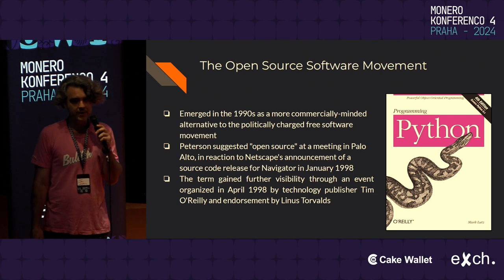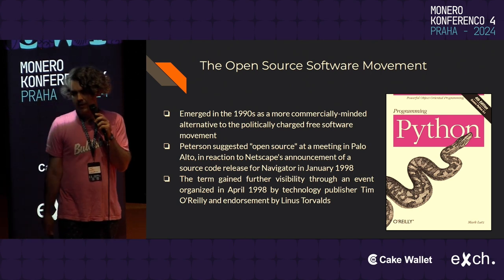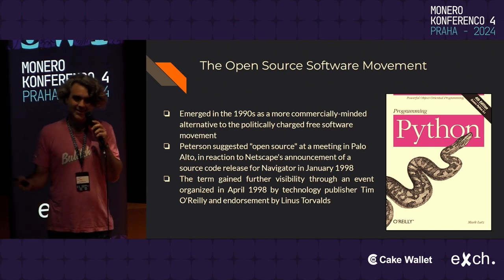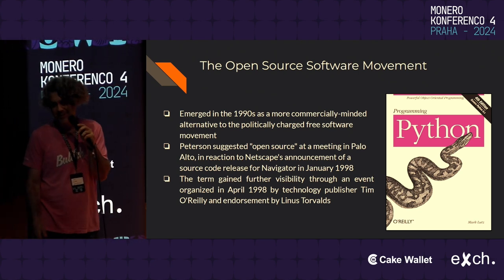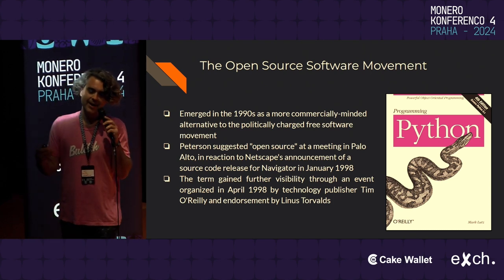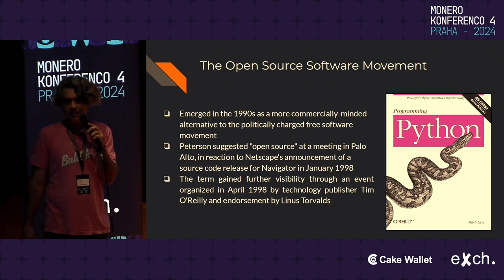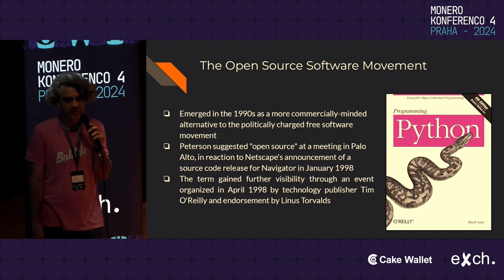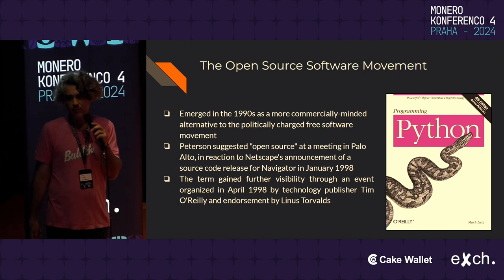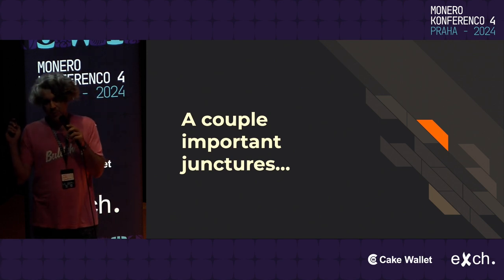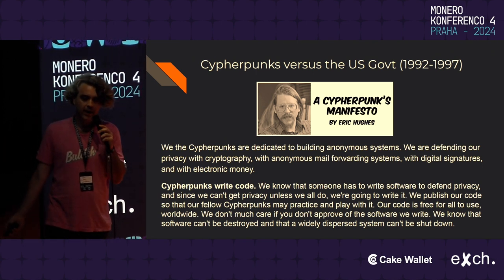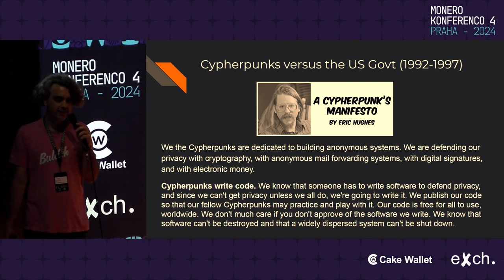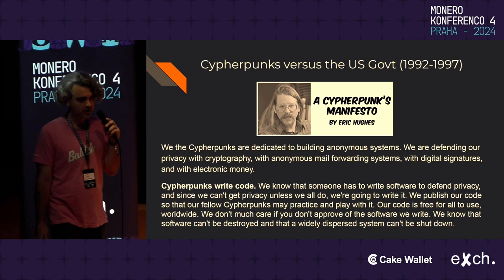Stallman treats it as almost an existential issue. So there's this group of people in Silicon Valley who were like, this guy's too extreme, and we want to bring Linux to more people. Around the time they released the source code to Netscape Navigator, they had a meeting where Christine coined the term, and then Linus and Tim O'Reilly — known from his books — decided to help promulgate and endorse this term. That was the start of 'open source.' A couple of important junctures: the early 1990s involved a lot of open-source cryptography software that the government was treating as munitions.